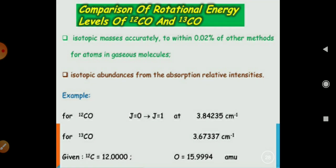Now, if we compare the rotational energy level in 12CO and 13CO, the isotope masses accurately to within 0.02% of other methods for atoms in gaseous molecules. If we calculate the isotope of both of these, for example,